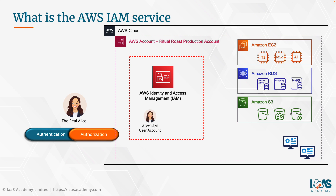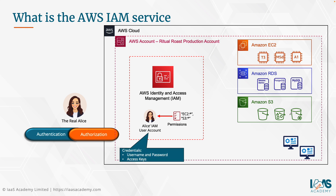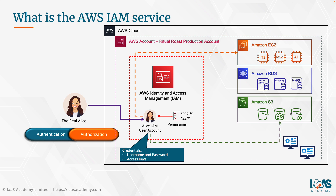With IAM, we create an IAM user account that represents Alice. To enable her to access the services she needs, we create IAM policies — permissions that specify exactly what Alice can or cannot do in the AWS account. These permissions are attached to her IAM user account. Once configured, we create credentials she can use: a username and password for console-based access, or access keys for programmatic access via the CLI. With her account and permissions in place, she can log in and access the services she needs.